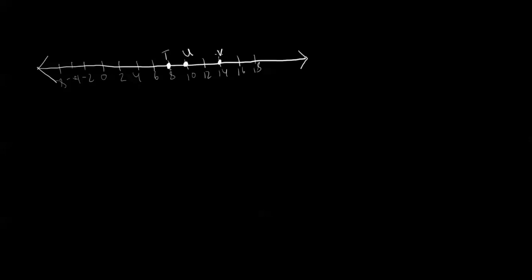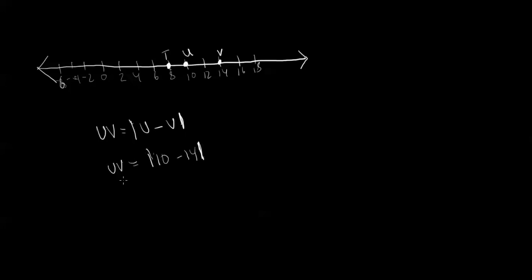What we want to do is find out what is UV. In order to do this we have to use the coordinate numbers of each letter. So we have UV equals absolute value of U minus V. So we can plug in the number values: UV equals absolute value of 10 minus 14. When we simplify this we get absolute value of negative 4, and the absolute value of negative 4 gives us positive 4. So the distance UV is 4.